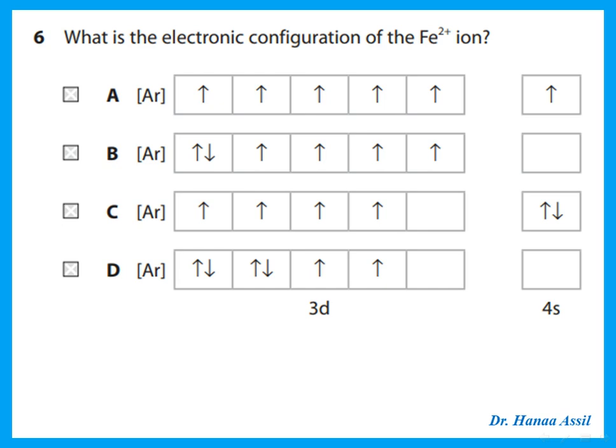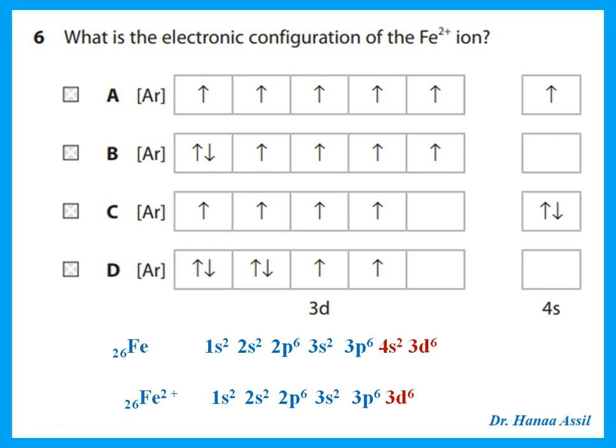What is the electronic configuration of Fe²⁺? Iron has 26 electrons. When it forms a 2+ ion, we lose the two electrons in the 4s, leaving 3d⁶. When filling the 3d sub-level, we place one electron into each of the five orbitals first, then start pairing. With 6 electrons we place one in each d orbital and pair one, giving the electron configuration [Ar] 3d⁶ for Fe²⁺.